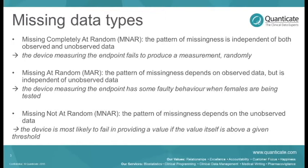And then there is the one which every statistician and investigator is really concerned about: missing not at random (MNAR), which means that the fact that a record is not observed is due to the value of the record itself. The example I've given is that the device is most likely to fail in providing a value if the value is above a given threshold. A very common example in social surveys is when you ask people to provide their income - people with the highest income are the ones most likely not to report it, which is a very obvious MNAR scenario.